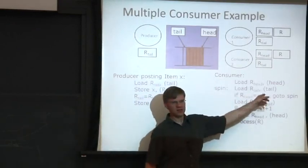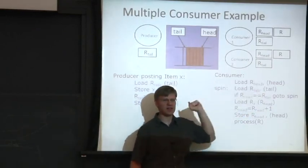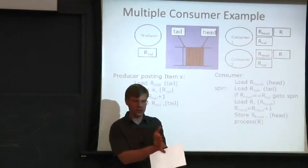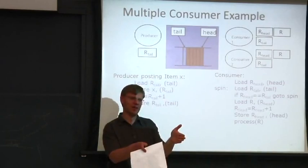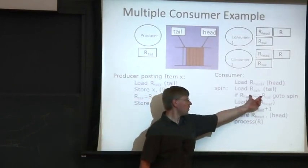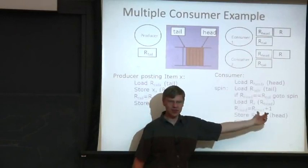Now they both check this. This is the case which is basically saying, is there anything in the queue? Does the head equal the tail? If the head equals the tail, there's nothing in the queue. If there's a distance between the head and the tail, that means there's some entries in the queue. So they both fall through and they say, well, yeah, there's stuff in the queue.